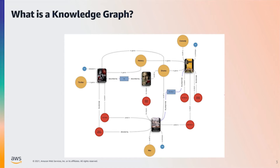Any entity could be a node, and an edge defines the relationship between nodes. For example, a movie node may be connected to a person node via a 'directed by' edge when such a relationship exists. Both nodes and edges may contain multiple properties that can further describe the attributes of their respective elements.